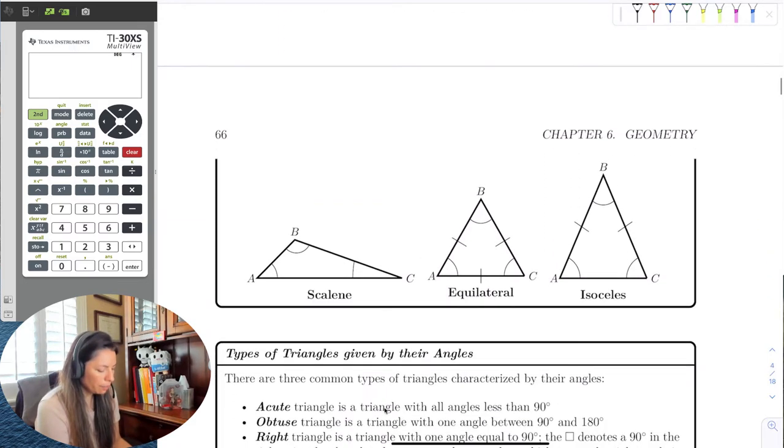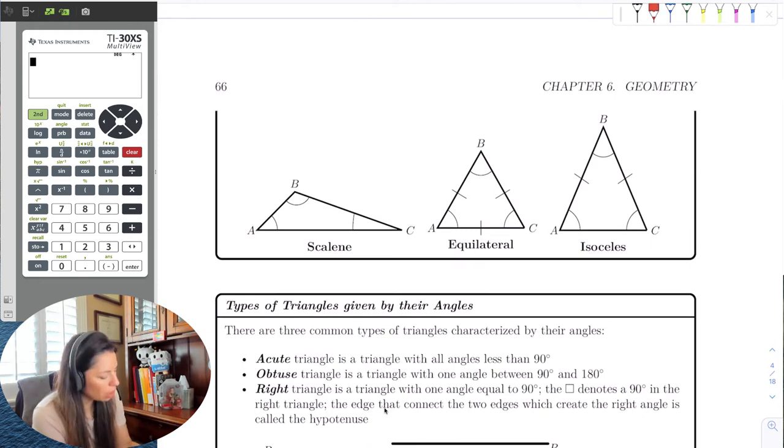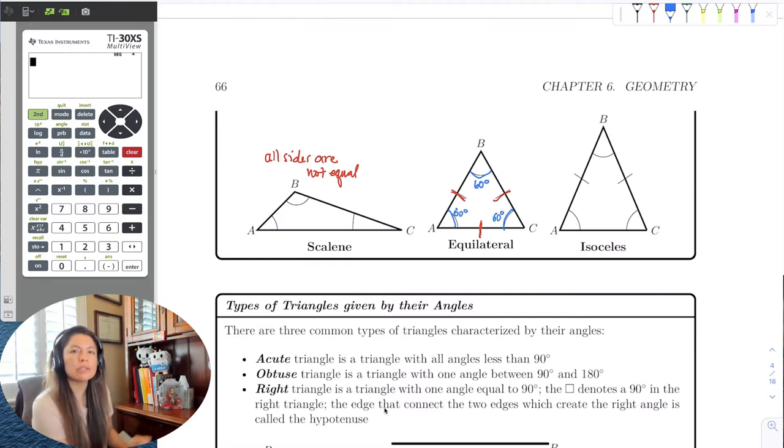A scalene is when all sides are not equal. Equilateral means all the sides are equal, meaning that we denote the equal sides by a little line through the sides. And if an equilateral has all three equal sides, what's fun is that all the angles have to be equal. So each of these angles are 60 degrees. Because you can't have equal sides without some sort of equal angles.